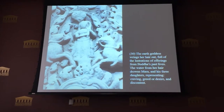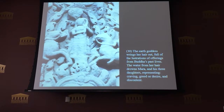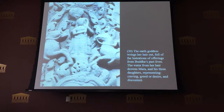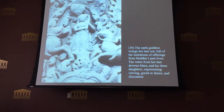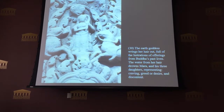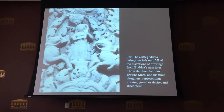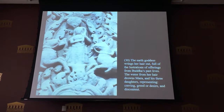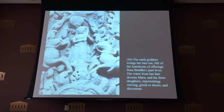Mara, that demon, sent these three temptresses who represent greed, desire, discontent, and craving. So when she wrung out her hair, she washed them away, and Buddha was able to reach enlightenment with her help.